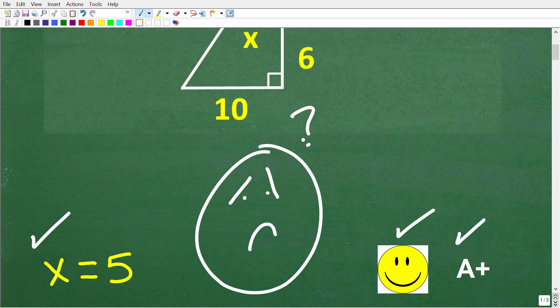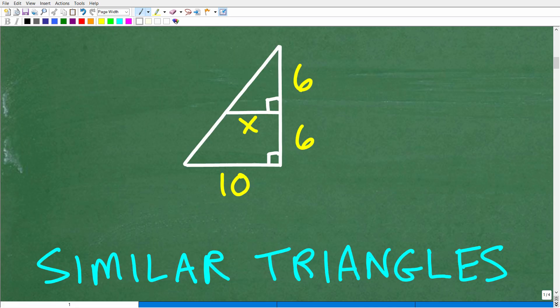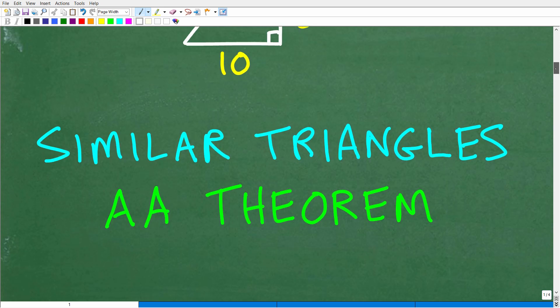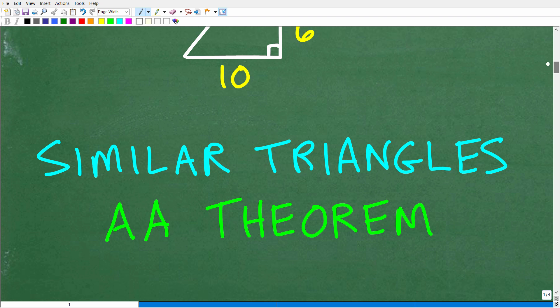To solve this problem, we're going to have to know something about similar triangles. The first thing we need to know is that we're dealing with similar triangles. The second thing is that we need to understand this specific theorem, the AA theorem. AA stands for angle angle theorem.